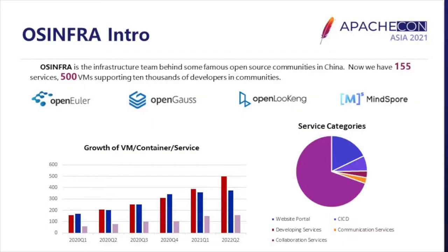To be accurate, OpenEuler, OpenGauss, OpenLooker, and MindSpore are our four major clients. Although they belong to different technology fields, they all share two themes in common: started by Huawei and supported by our team. We started by the end of 2019 along with the foundation of the OpenEuler community. And now we have more than 155 services including web portal, CI/CD, communication and collaboration services. Furthermore, there are about eight Kubernetes clusters and more than 500 virtual machines running day and night behind these communities.